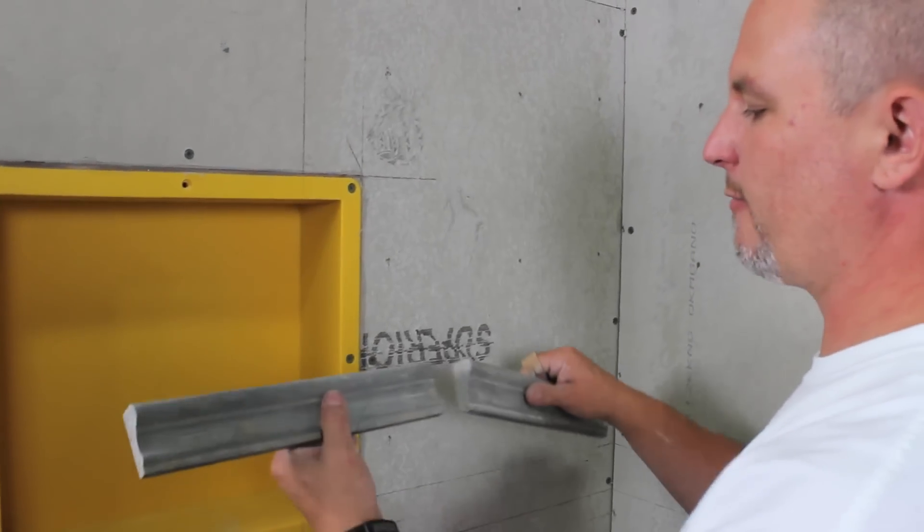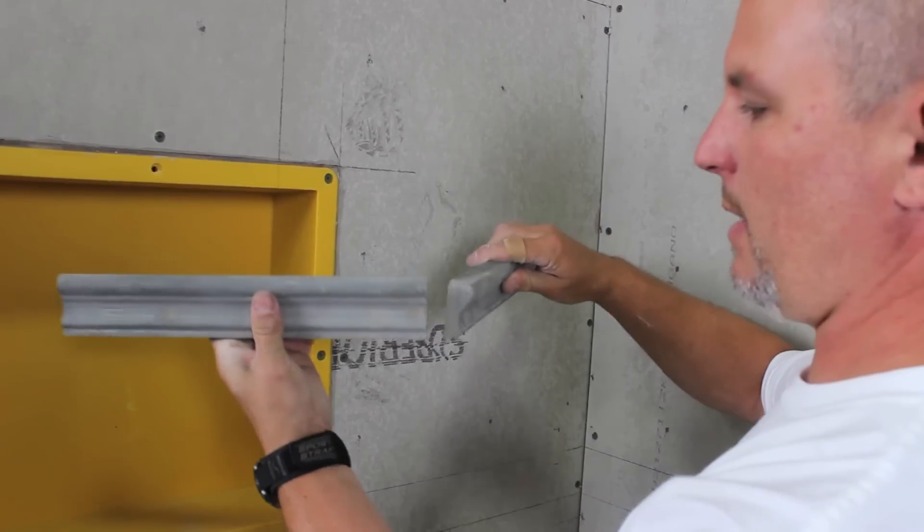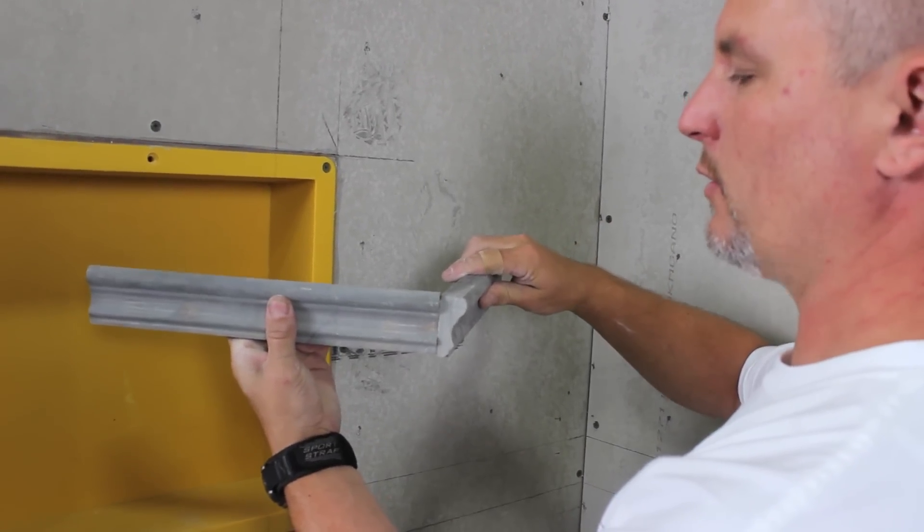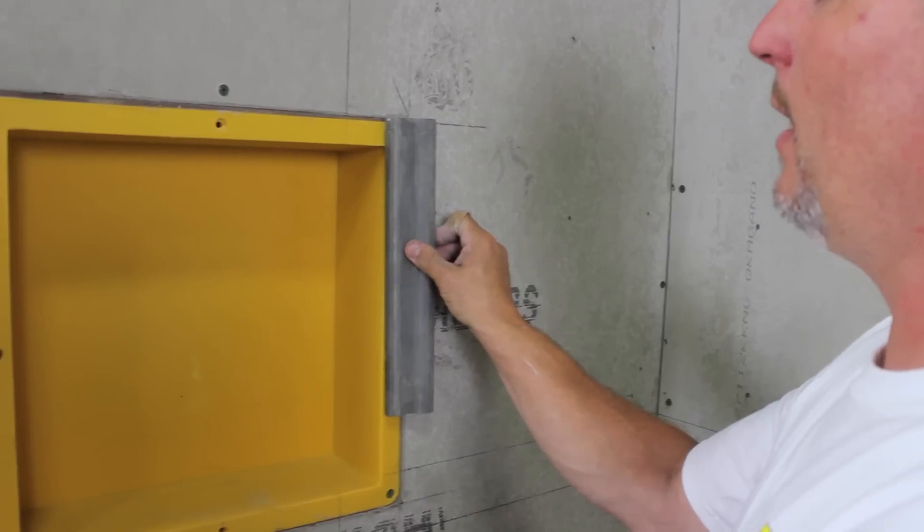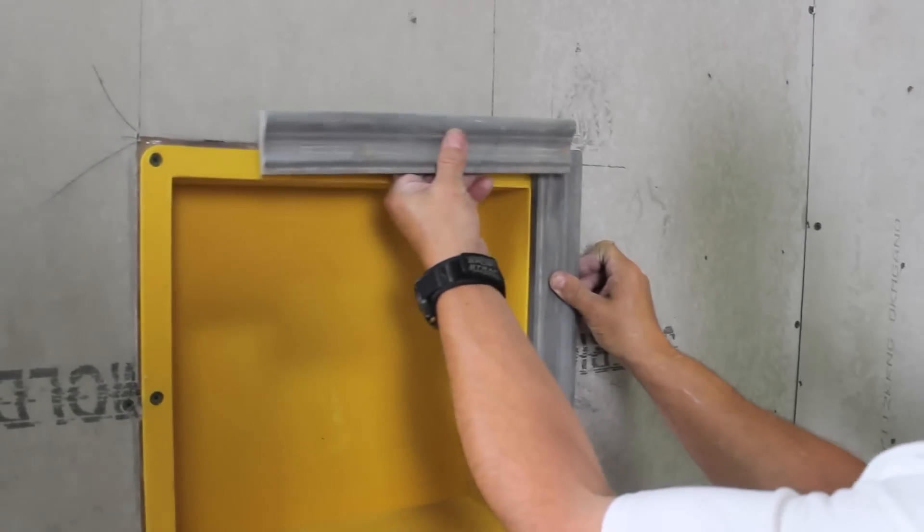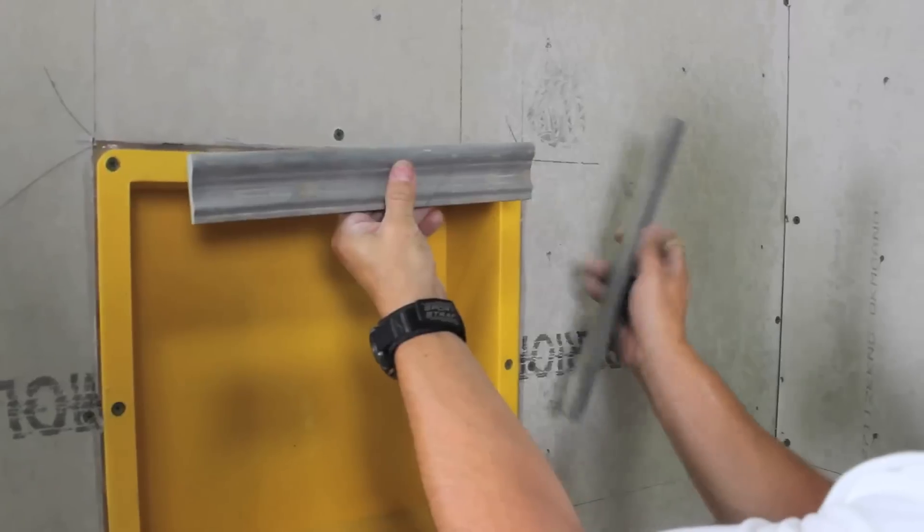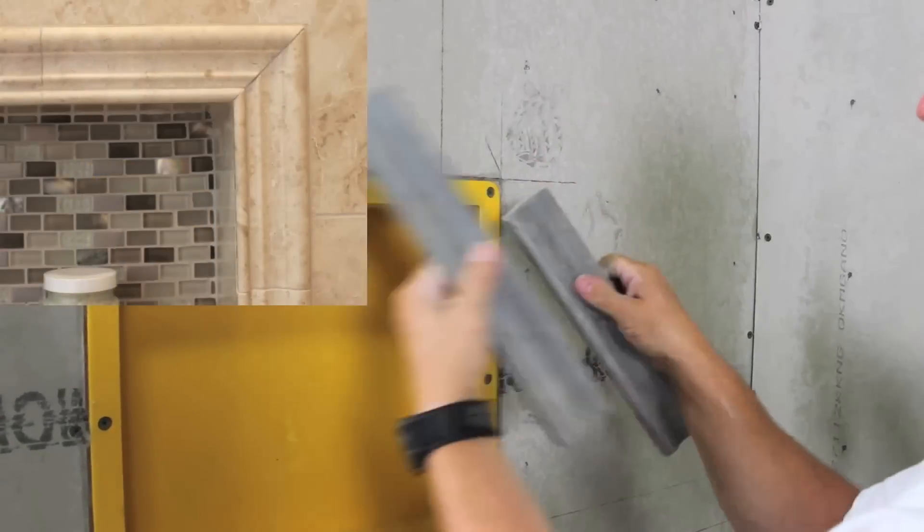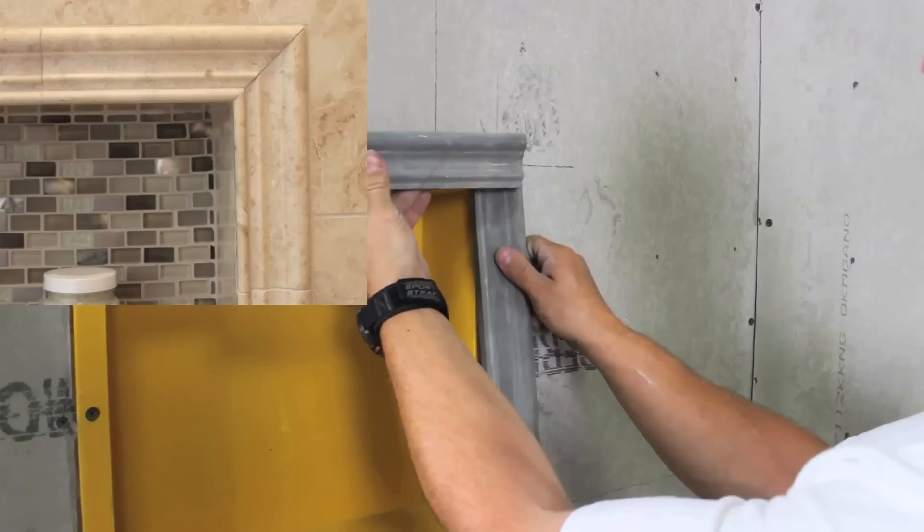So, we talked about mitering for an inside corner. We talked about a miter for an outside corner. There's a third miter involved, which is called a picture frame miter. And here, just like a picture frame, we're going to go ahead and miter these pieces here and here to create a nice picture frame.